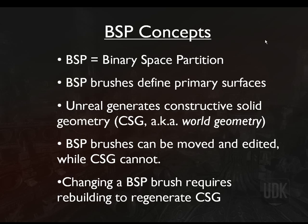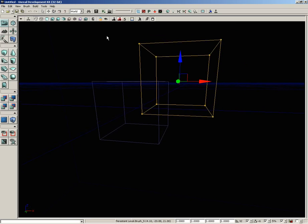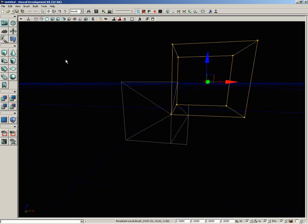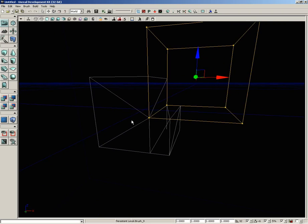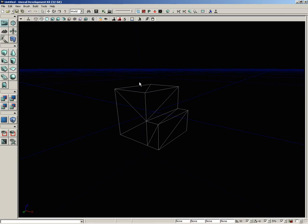As you get more used to UDK, you'll discover that's somewhat debatable - you can technically build an entire level without a single BSP surface. But BSP can be a nice quick way to rough out surfaces even if you later replace them with static meshes. Unreal generates constructive solid geometry, or CSG, also known as world geometry, from your BSP brushes. Switching to regular wireframe mode, we can see the CSG or world geometry created as a result of those BSP brushes.